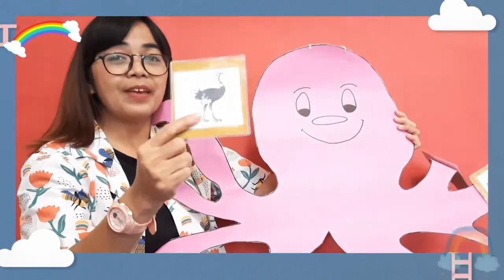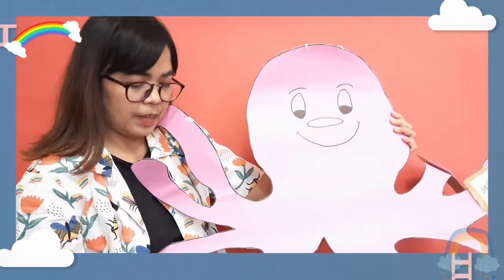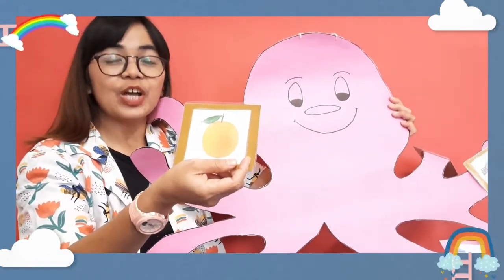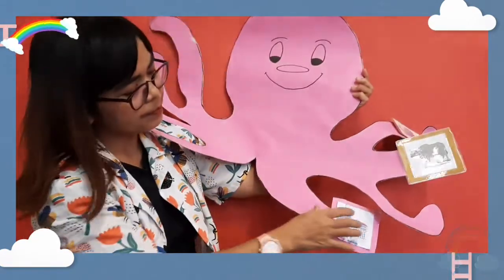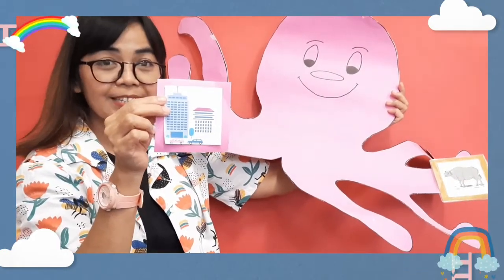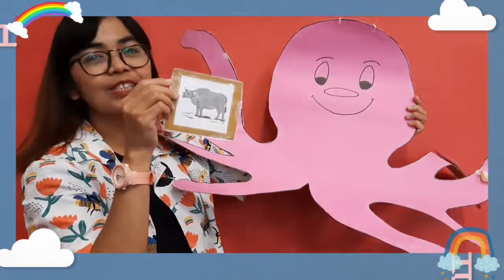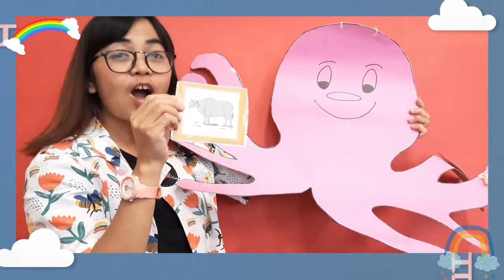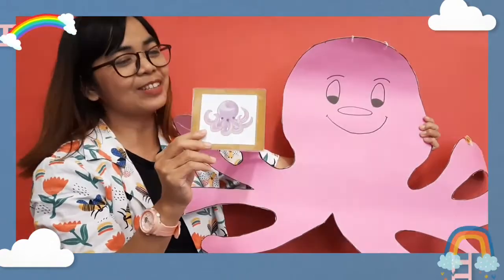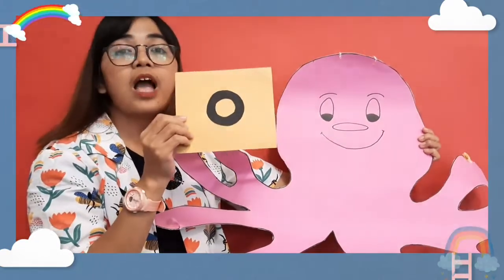Ostrich — oh, very good! Ostrich starts with O, the same as Miss Little Octopus. And what she has here? Orange, orange — O, very good! How about here? Office — office, O, yes! And what do we have here? Ox — ox, O, very good! And this is octopus too — octopus, O! So all of them begin with O.